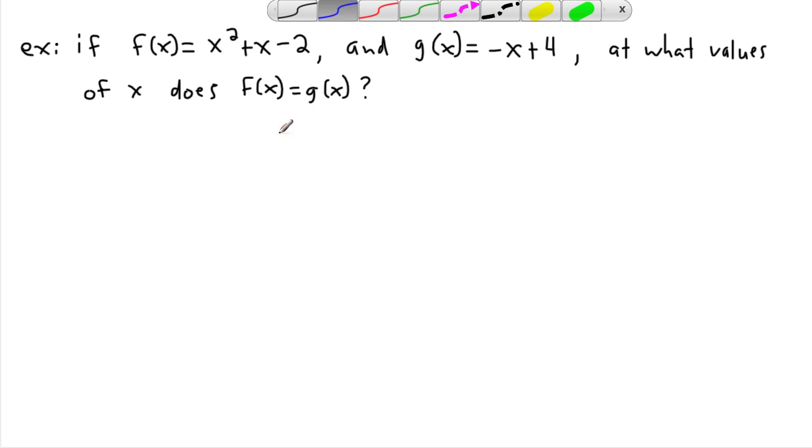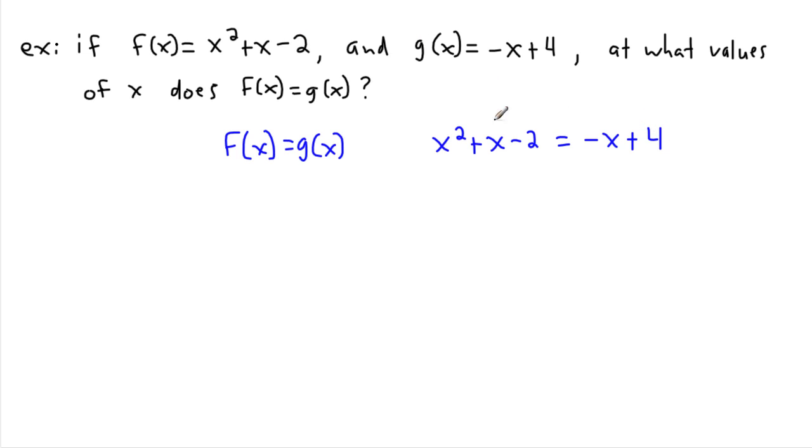So I'm going to say f of x equals g of x. So that means I'm going to say x squared plus x minus 2, that's f of x, equals g of x, which is minus x plus 4. Now basically I'm trying to solve this. And there's a lot of ways of looking at this. When you're actually trying to graph things or even just solve a system of equations like this, there are so many ways to solve this. You could actually manipulate and move these over and end up finding the zeros of this quadratic.